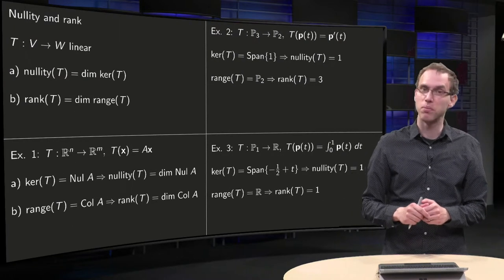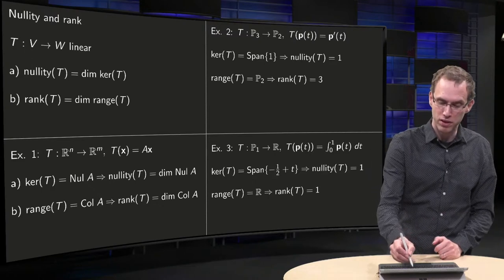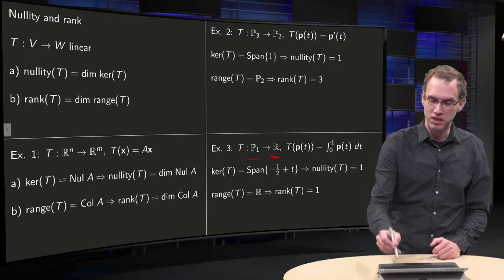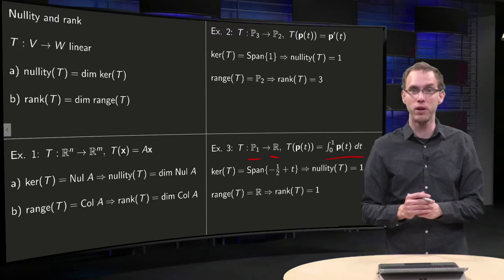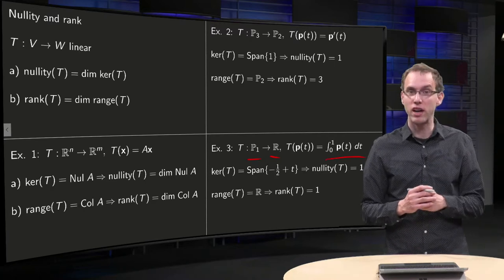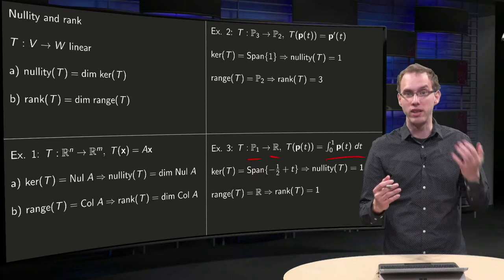Third example: if we have T from P1 to R, which you get by integrating your polynomial from zero to one, we found in an earlier example the kernel and the range.